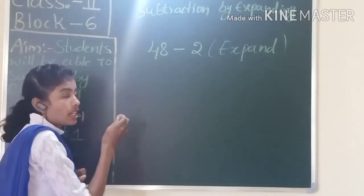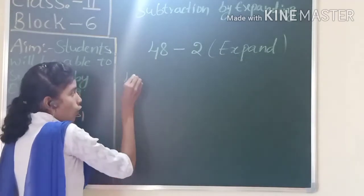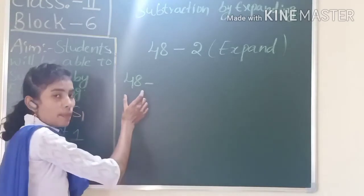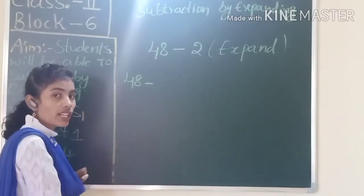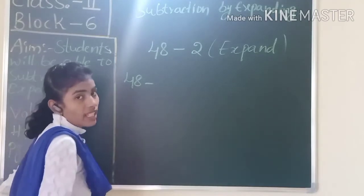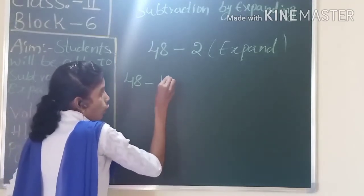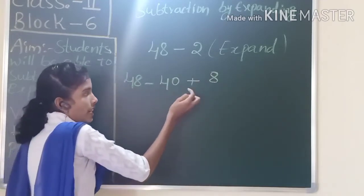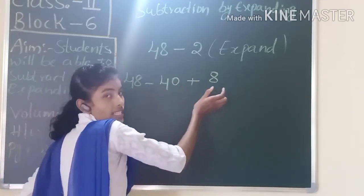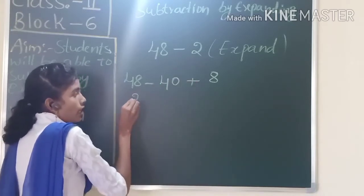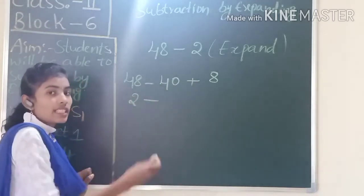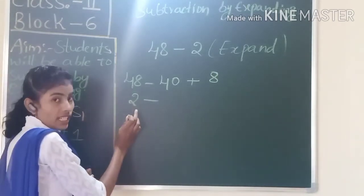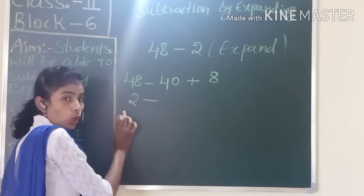So 48 minus 2, I have to subtract using the expansion method. In addition we learned the expansion method to add; now we are going to use subtraction by expanding method. First we have to take the number 48 and expand it. What is the expansion form for 48? 48 expanded is 40 plus 8. Next, take the second number and expand it. Do we have tens in 2? No.